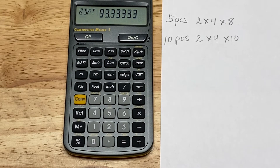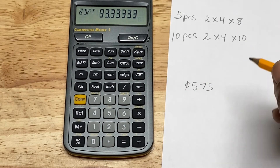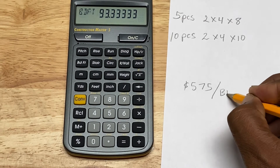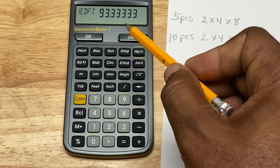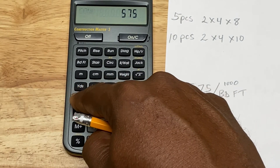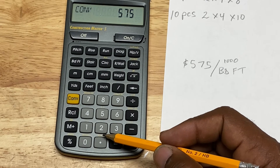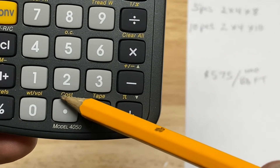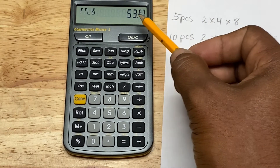As of last week, the price of lumber was about $575 per thousand board feet. We multiply the total board footage by 575, then press convert and cost. That gives us what it costs for the lumber we need.